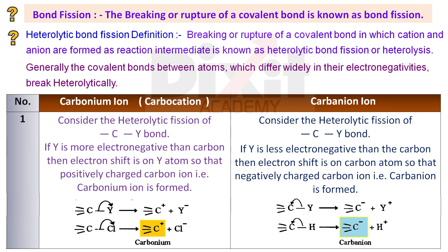What is heterolytic bond fission? Breaking or rupture of a covalent bond in which a cation and anion are formed as reaction intermediates is known as heterolytic bond fission or heterolysis. Generally, the covalent bonds between atoms which differ widely in their electronegativities break heterolytically.